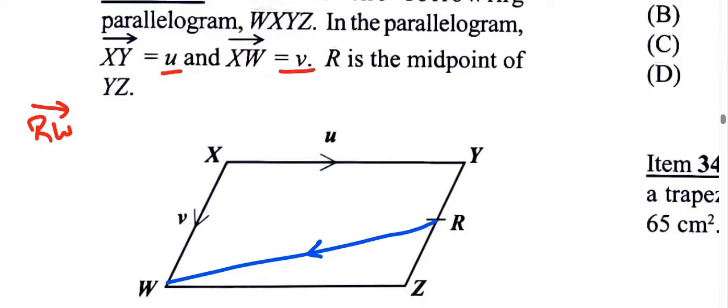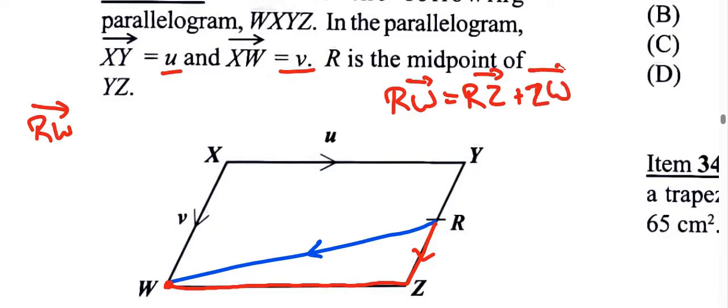So we're going to go, in order to get from r to w, we're going to go from r to z and then from z to w. So we still end up at w. From r to w, we can go from r to z and z to w, so z is acting as our transit point. So RW can be expressed as r to z and then from z to w. It's like the triangle law of vectors.